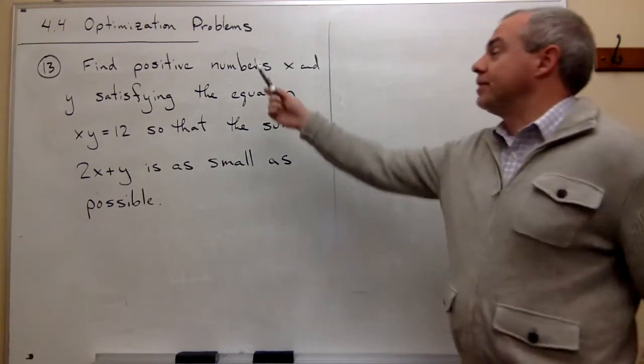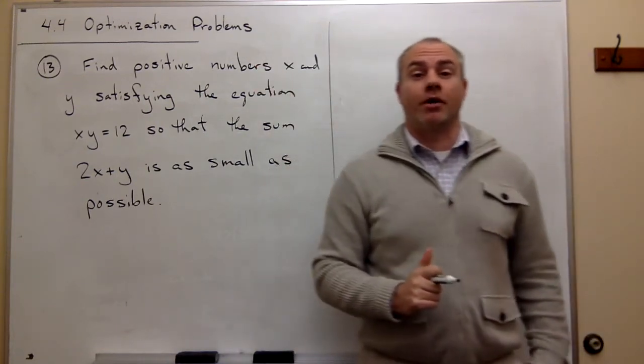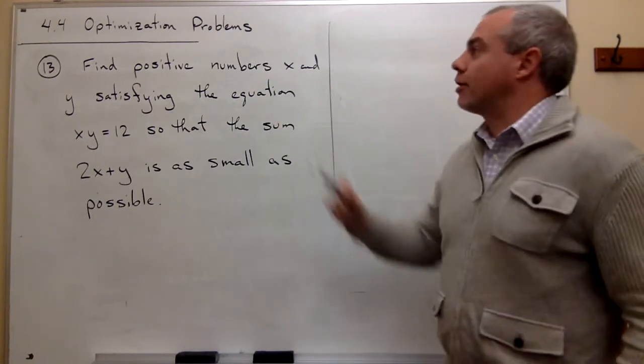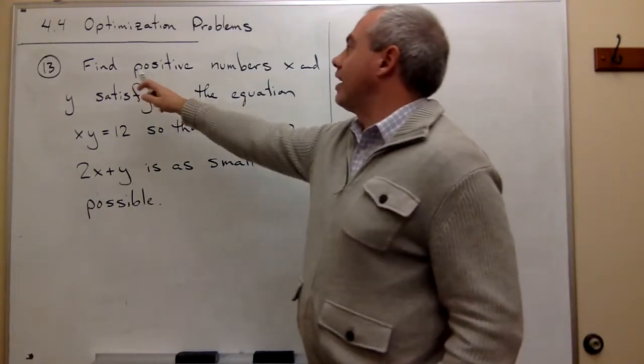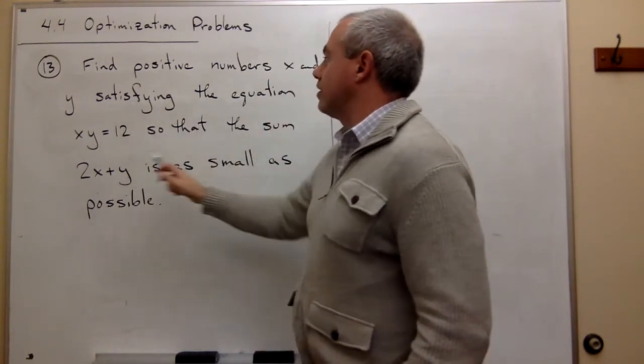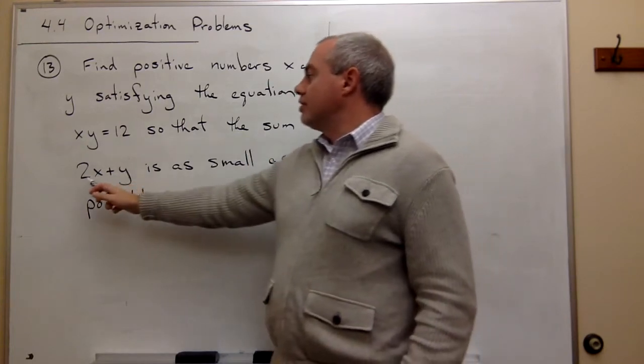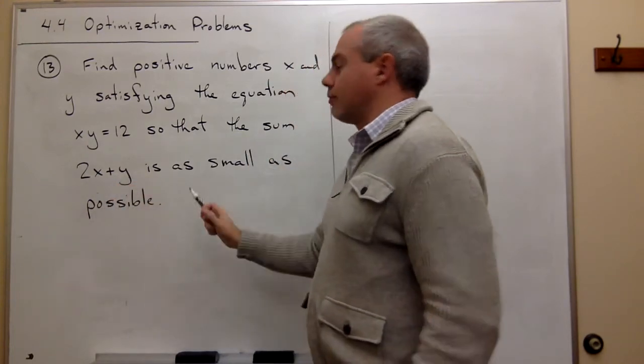Welcome back. Today we'll be talking about section 4.4 on optimization problems and let's look at problem number 13. We'd like to find positive numbers x and y satisfying the equation xy = 12 so that the sum 2x + y is as small as possible.